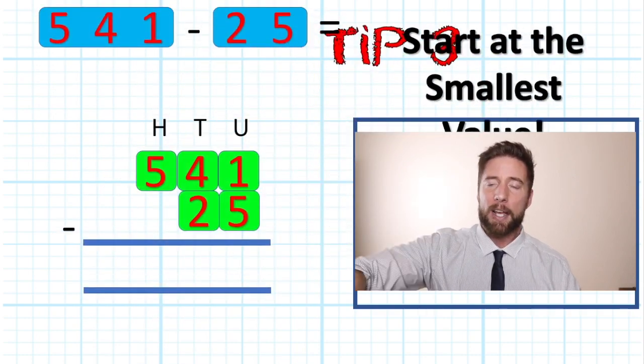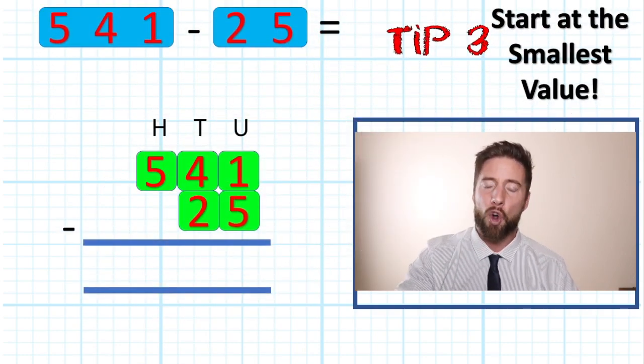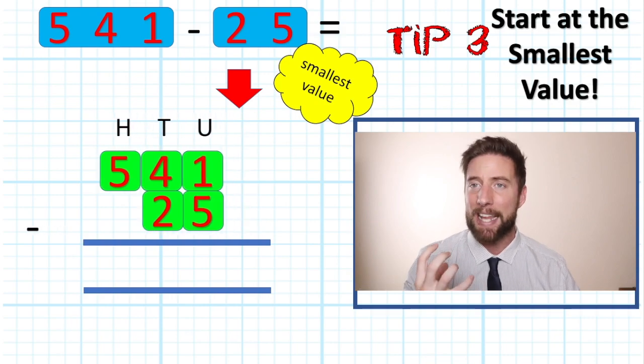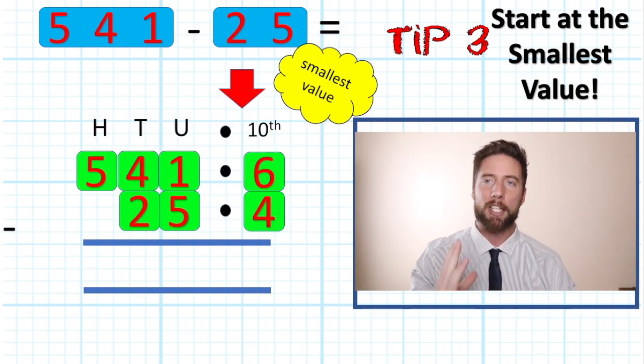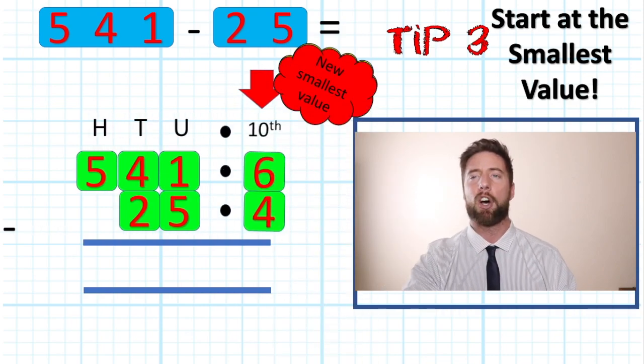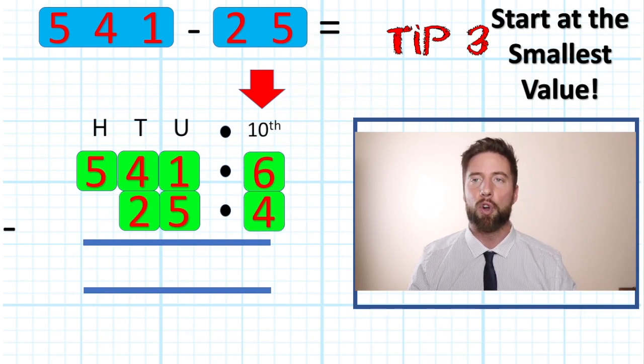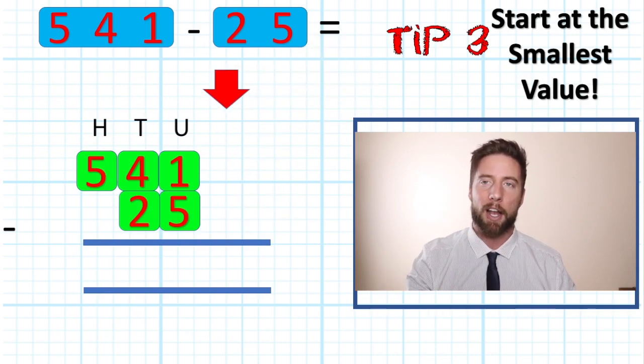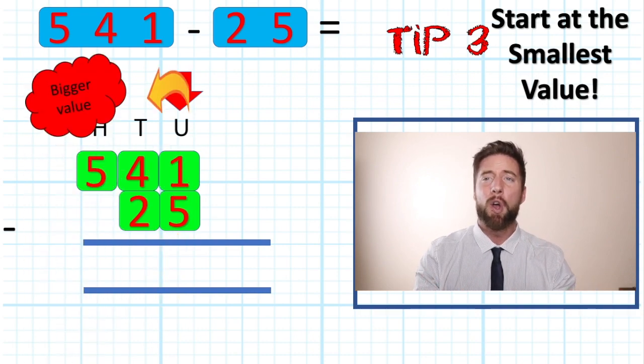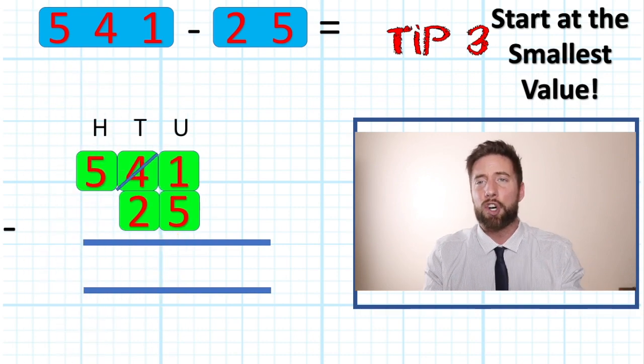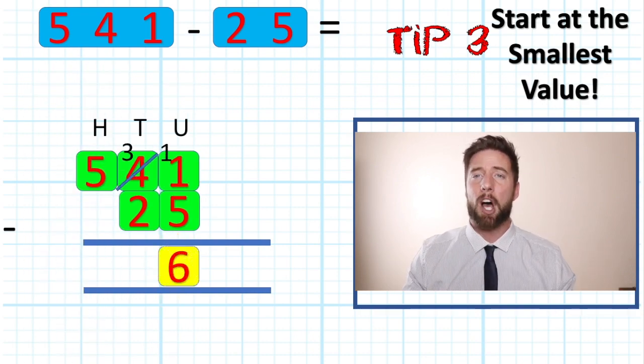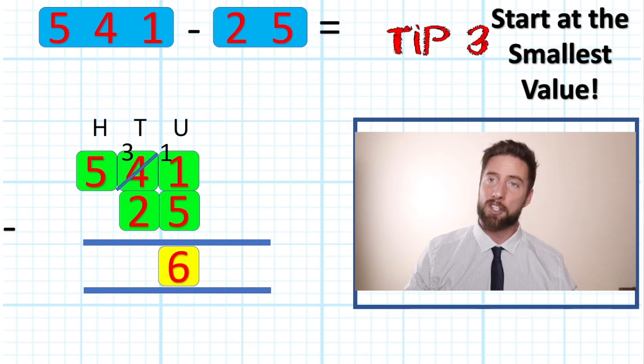Tip number three: start at our smallest value. It might be units, it might be decimals. Okay, but we always know the further to the right on our place value, the smaller the value. We always start at our smaller value so that if we've got something to borrow, we have got something bigger next door to borrow from. Start at our smallest value is tip number three.